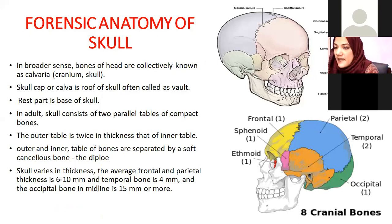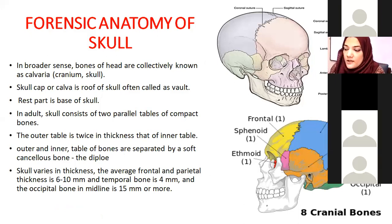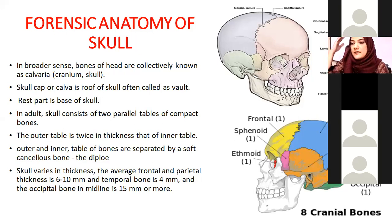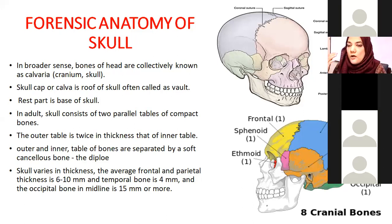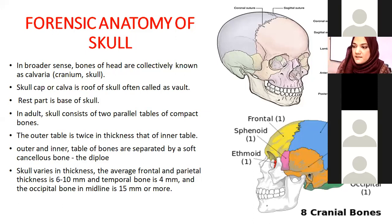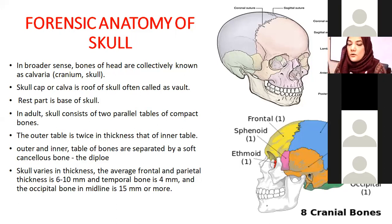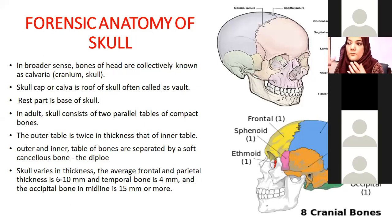When discussing head injuries, the anatomy of the skull should be known. The skull is basically divided into two parts. One is the cranium, known as the calvaria — the vault or skull cap. The other is the rest of the skull, the base of the skull. Both are considered separately because the complications from the skull vault and the base of the skull are different.